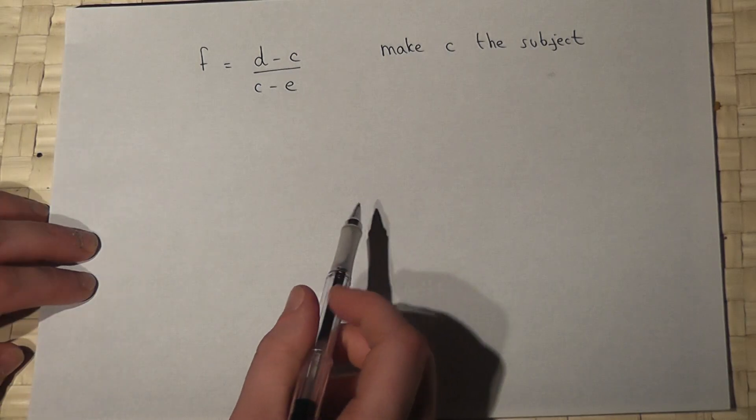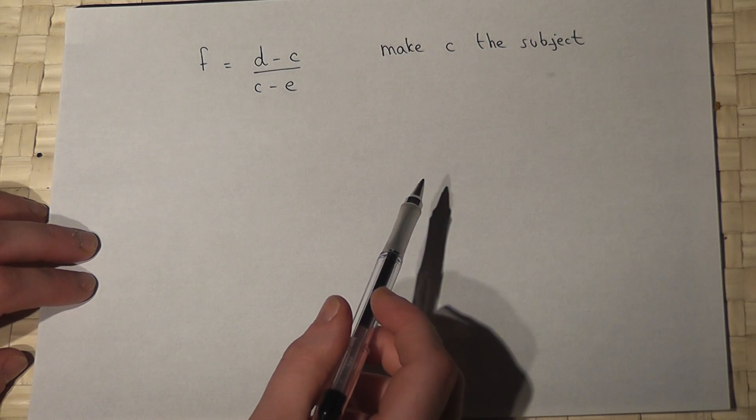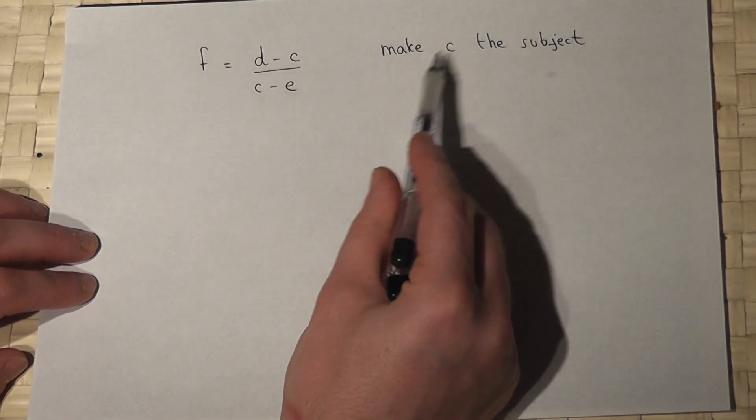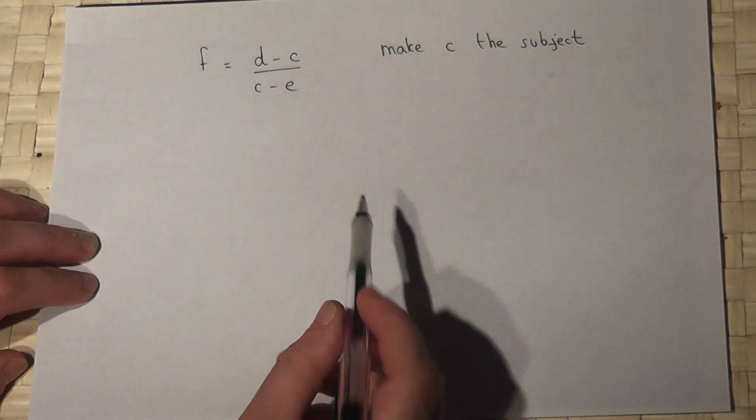This video reviews changing the subject of a formula. This is one of the harder examples because we want to make C the subject and C occurs more than once in the expression.